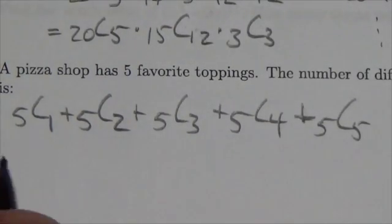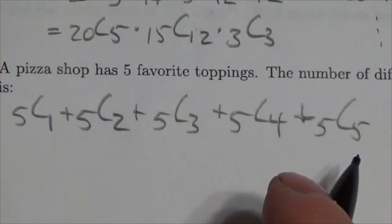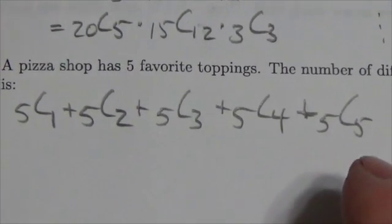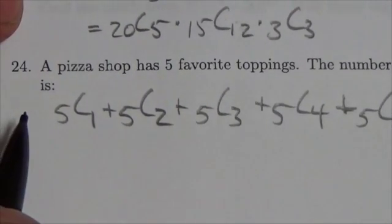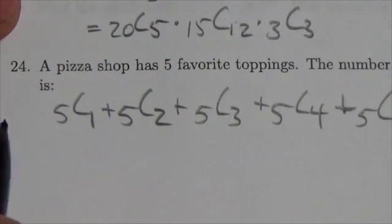Now, important to note here, that this is almost a complete set of combinations here. I am just missing five choose zero, where you choose none of them.